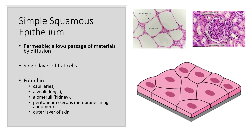We're going to go over each of the different types of epithelial tissue one by one — where you can find them, how they look, and what they function in primarily. Beginning with simple squamous epithelium, which functions in allowing passage of materials by diffusion because these cells are permeable. It's simple, so it's single-layered, and it's squamous, so that's basically just a single layer of flat cells.